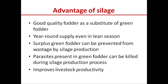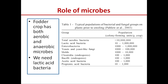Advantages of silage: good quality fodder acts as a substitute for green fodder, and silage gives year-round supply even in the lean season when green fodder is not naturally available. Surplus green fodder can be prevented from wastage by silage production. Parasites present in green fodder can be killed during the silage production process, and silage improves livestock productivity.